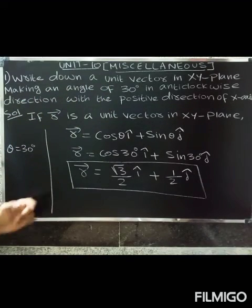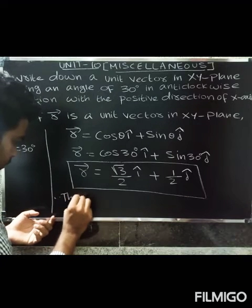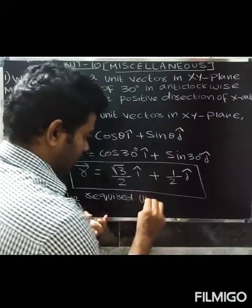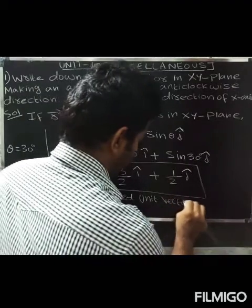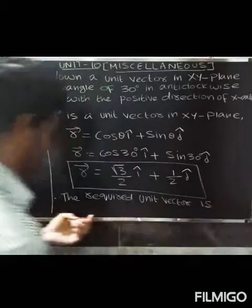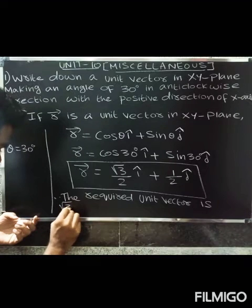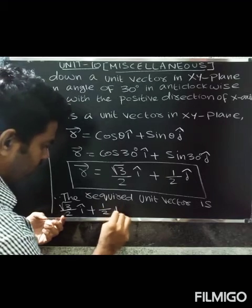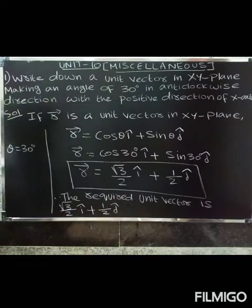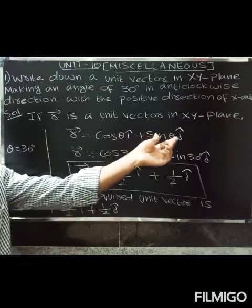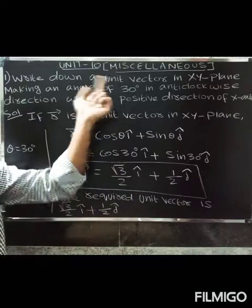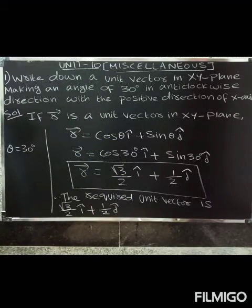So the required unit vector is (√3/2) î plus (1/2) ĵ. Just substitute the theta value into the formula r = cosθ î + sinθ ĵ, and the required unit vector is obtained. Now moving on to the next question.